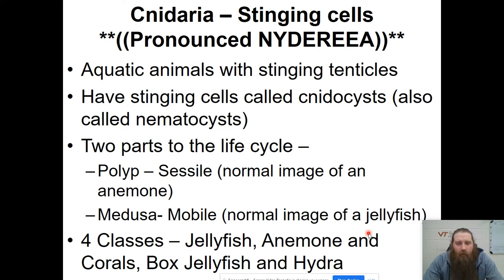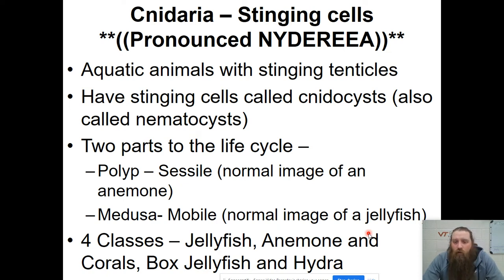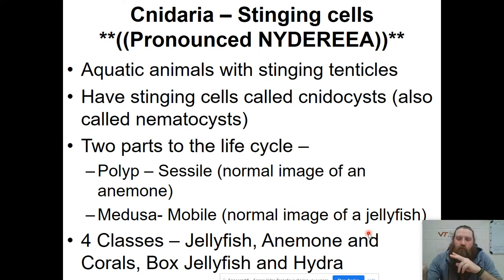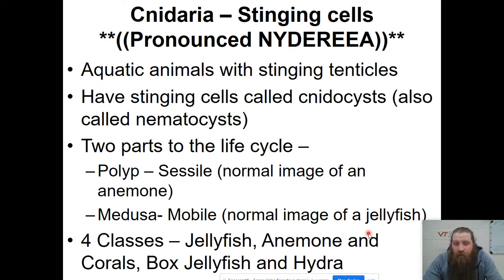Now let's look at Cnidaria. Cnidarians are organisms that have stinging tentacles. In the ends of these tentacles are cells called nematocysts. The nematocysts have a little hair trigger, so if you touch that hair it shoots out a little poison dart — like a hypodermic needle connected to a venom sac in the cell.